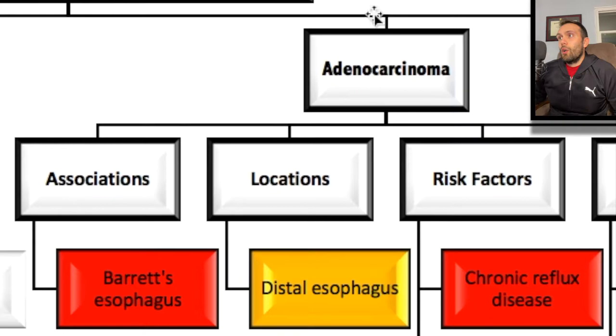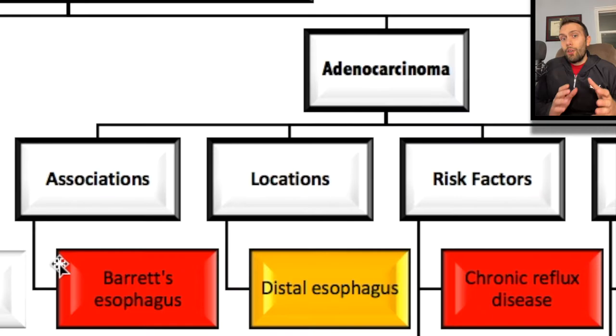Now let's talk about the specifics of adenocarcinoma and squamous cell carcinoma. For adenocarcinoma, the major associations are very high yield. If you can't remember anything from this video, remember that reflux disease and Barrett's esophagus are associated with esophageal adenocarcinoma.